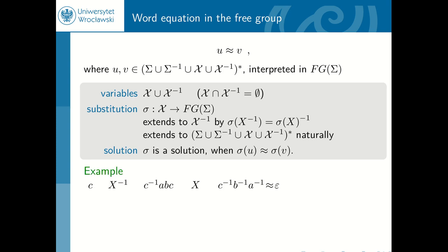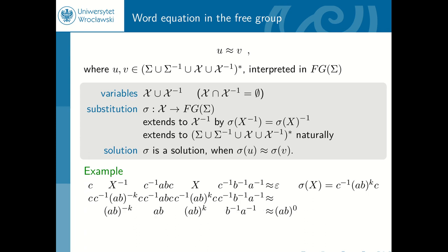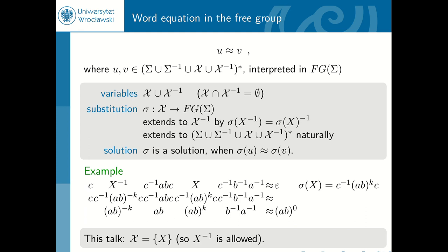For instance, if we look at the following equation — we want this long word on the left-hand side to be equal to epsilon — then when we substitute x with c to minus one, ab to k, and then c, we obtain a word which is not reduced. First we cancel out the c's and we see that everything here is a power of ab. When we sum the exponents up, we get zero, so indeed this is equal to epsilon as desired. In particular, note that this is a solution for an arbitrary k, so there are infinitely many solutions parameterized by this power. In this talk, as in this example, we will only consider the case where the set of variables contains only one variable, but we allow the usage of the inverse of the variable.